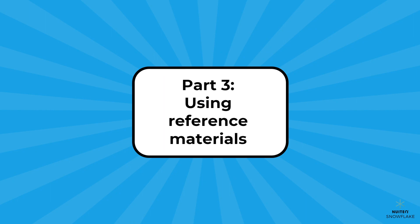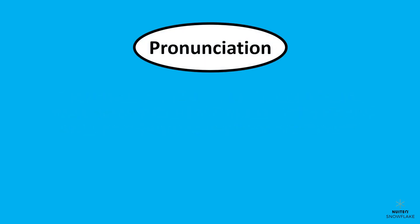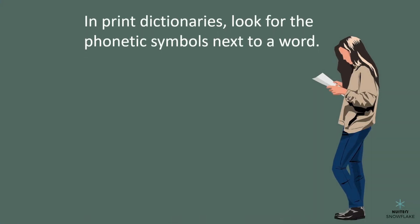Part 3: Using Reference Materials. Let's explore how to consult reference materials like dictionaries, glossaries, and thesauruses to find the pronunciation of a word or determine its precise meaning or part of speech. Let's start with pronunciation. If you have a print dictionary, you can usually find the pronunciation of a word by looking at the phonetic symbols next to it. These symbols represent the sounds of the word, so all you have to do is say them out loud.